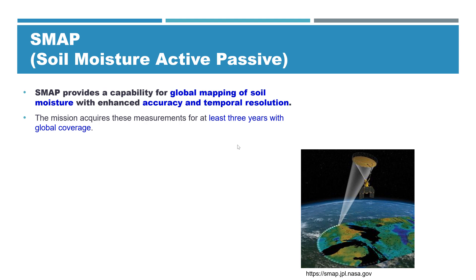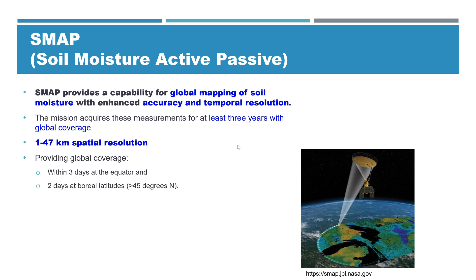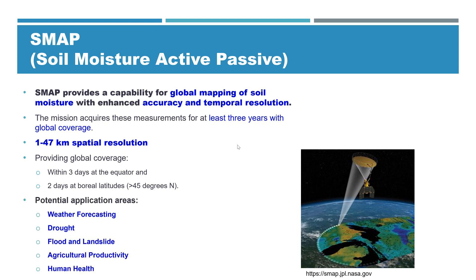The mission acquires this measurement for at least three years with global coverage. Spatial resolution currently ranges from 1 to 47 kilometers, and it provides global coverage every three days at the equator and every two days at the boreal latitude, meaning greater than 45 degrees latitude.